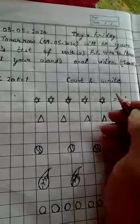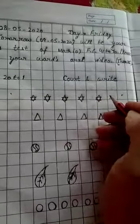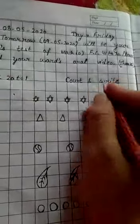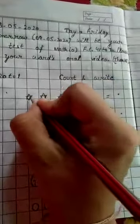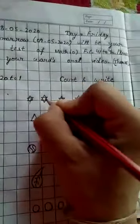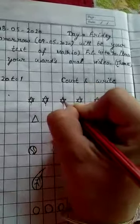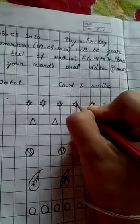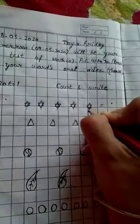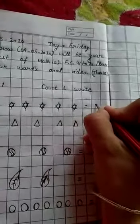Next topic is count and write. In this topic you have to count the different different shapes and write the numbers. So let's start. Firstly count the stars: 1, 2, 3, 4, 5. So write here 5. How many stars? 5. Right here 5.